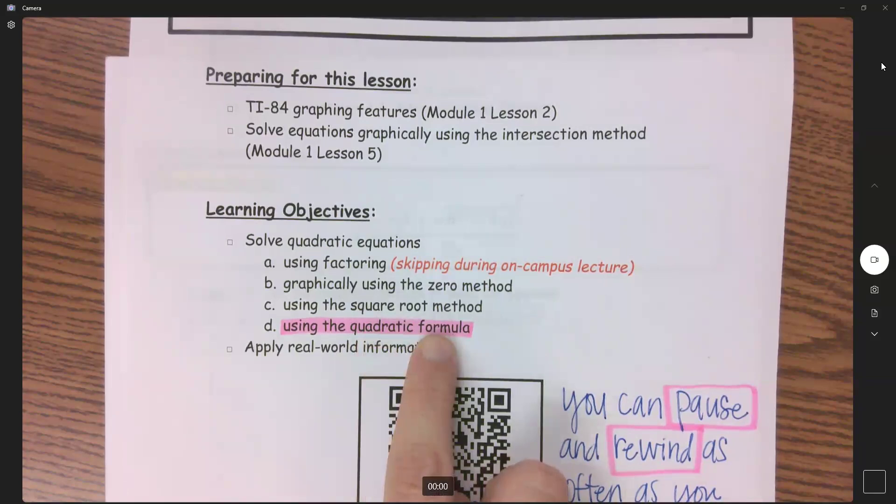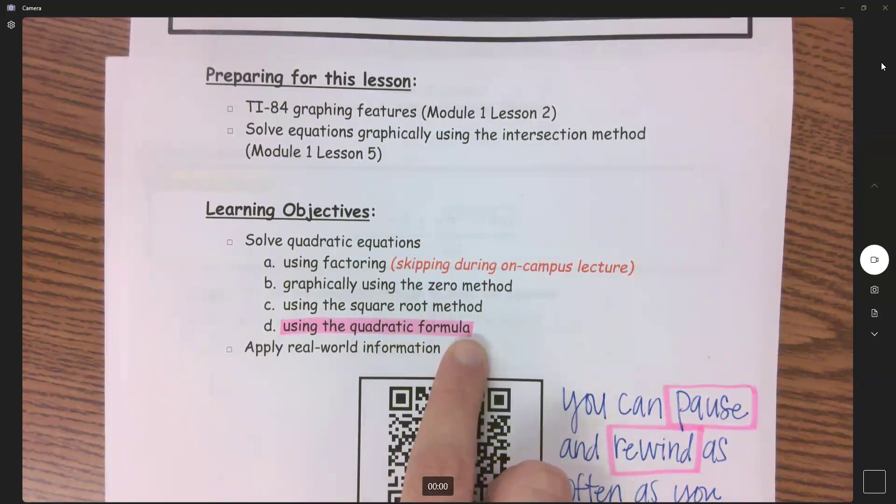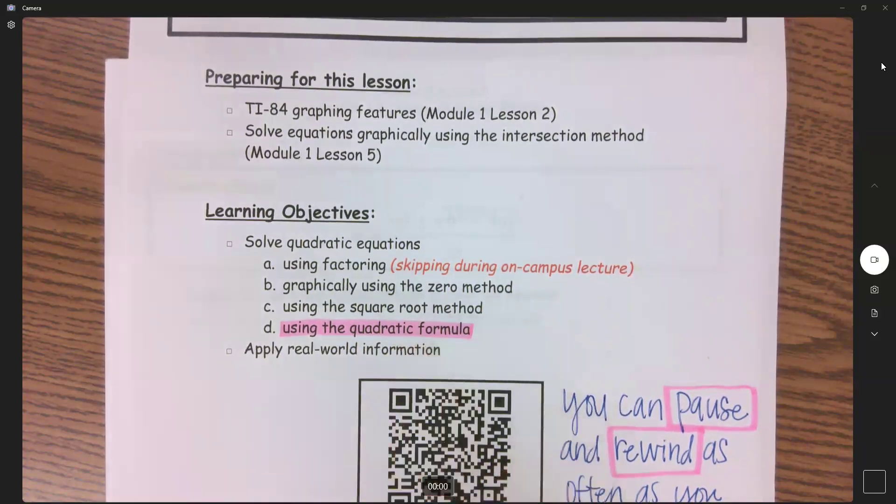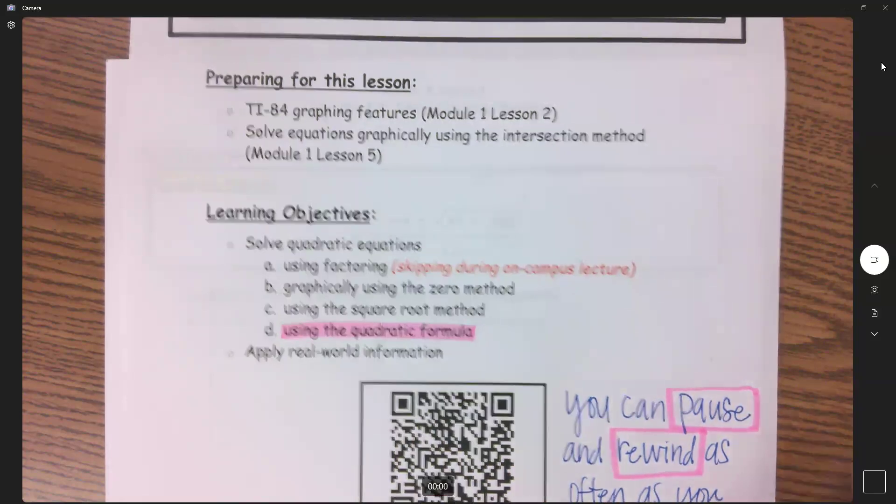If it's not factorable, we use the quadratic formula. If we need a radical, use the quadratic formula. If you can't use square root method, use the quadratic formula. So if you want to just use the quadratic formula for every single problem, that's okay. And that will work for every problem.